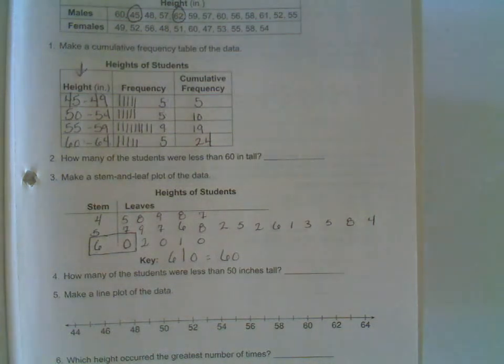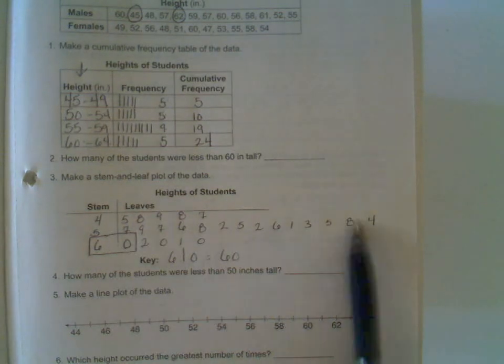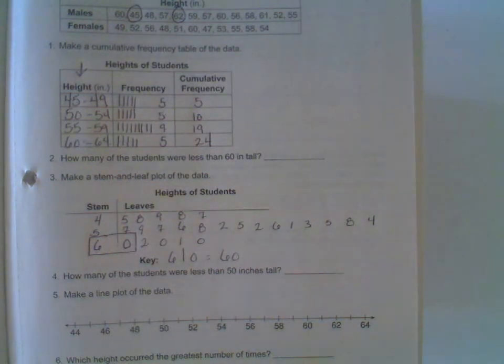There's also what they call an ordered stem-and-leaf plot. In an ordered stem-and-leaf plot, the only difference from what we just did is the leaves would be written in order from least to greatest for each row.